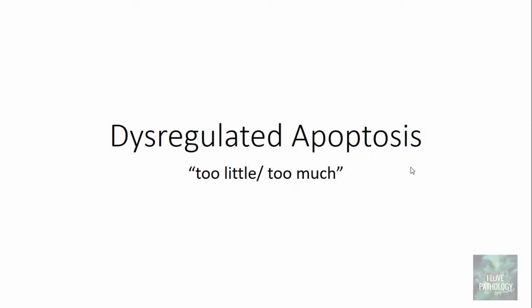What do we mean by dysregulated apoptosis? It means apoptosis is not regulated. We know that the regulation of apoptosis is basically by the balance between anti-apoptotic and pro-apoptotic genes. Whenever there is an imbalance or dysregulation, we encounter certain forms of diseases.